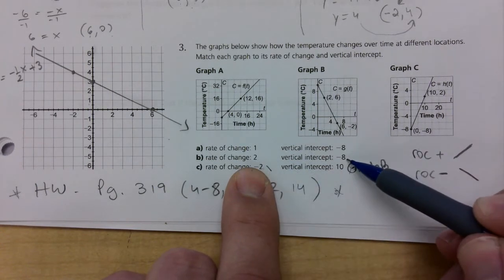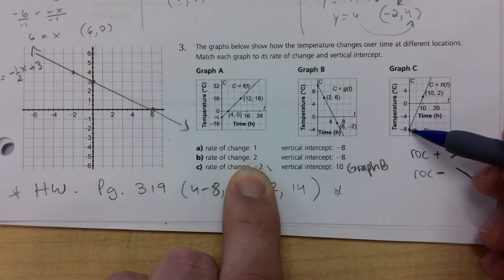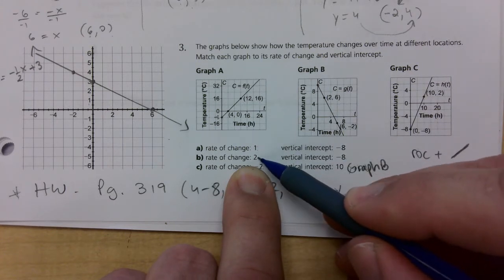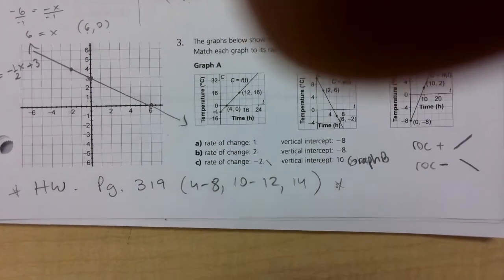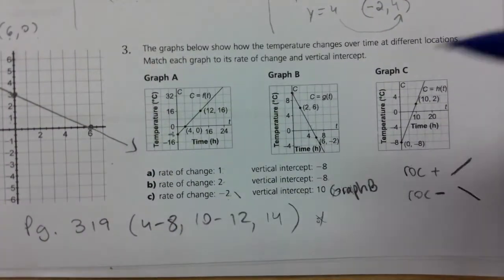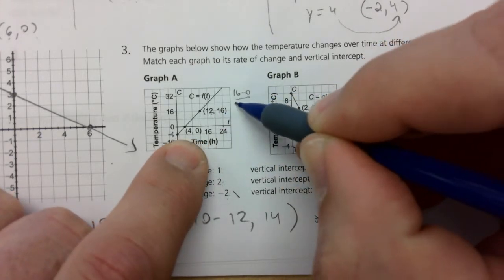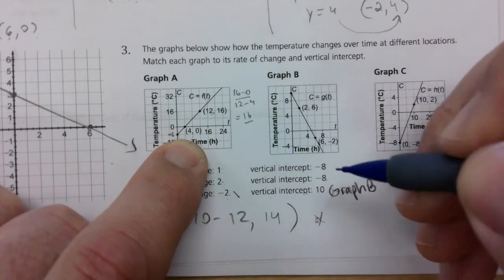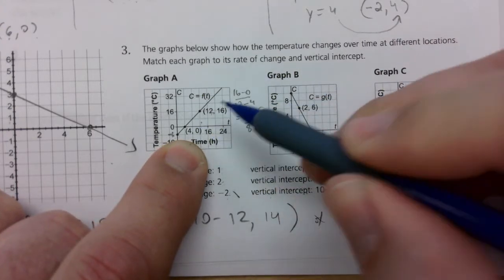Now we're down to these two — they both have an intercept of negative eight, because they use a scale of eight here and a scale of two here. We can't narrow it down based on that alone, so we need to look at the rate of change values of two and one. Using y₂ minus y₁ over x₂ minus x₁, that's 16 over 8, which is positive 2. So I know that this one's rate of change is 2, making it graph A.